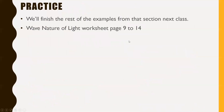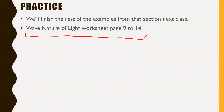That brings us to the end of today. We'll finish the rest of the examples from that section next class because we didn't get through the whole lesson — it was too much. I do want you to work on the Wave Nature of Light Worksheet, pages 9 to 14 in the part two booklet. The answer key is posted on the Google Classroom page. If you need any help, please let me know. Talk to you soon.